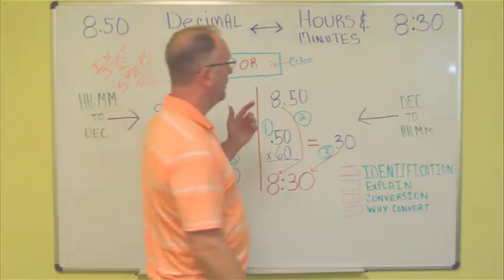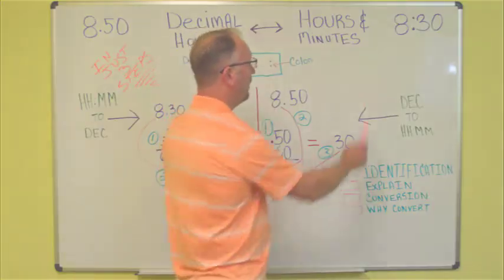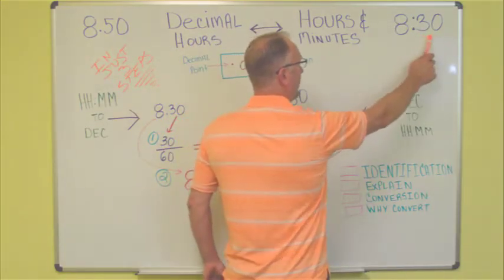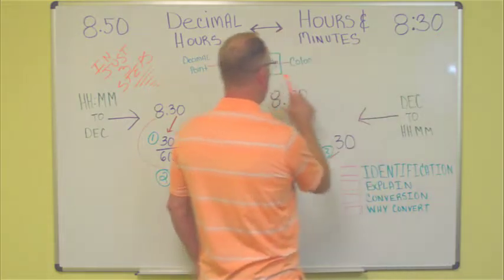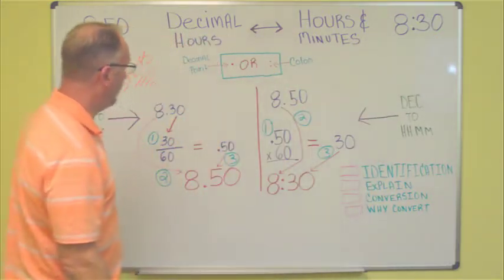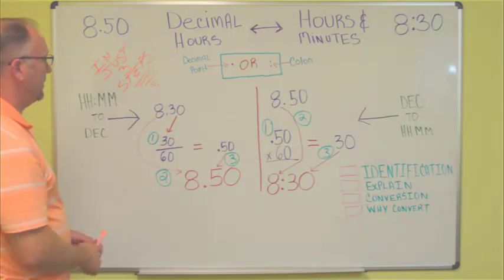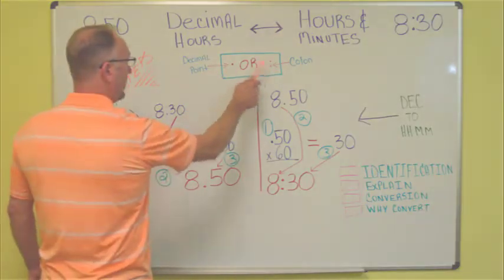Hours and minutes will always have a colon. For instance, 8 hours and 30 minutes, 8 colon 30. I misspoke earlier, a colon, not a semicolon. So that is the identification. Always look for a decimal point or a colon.